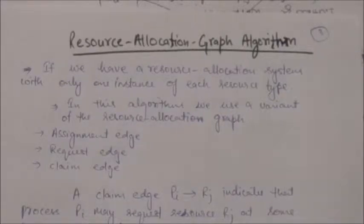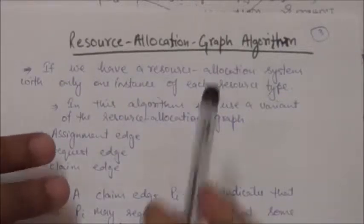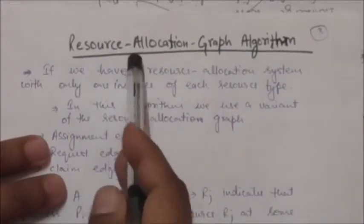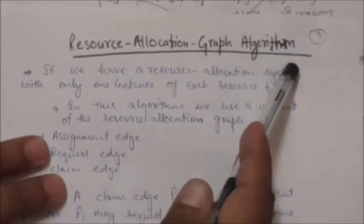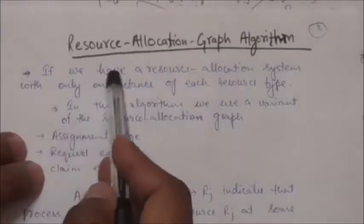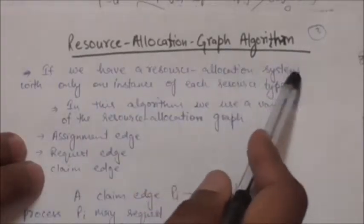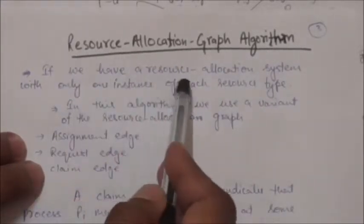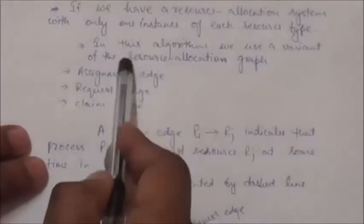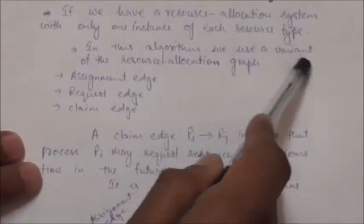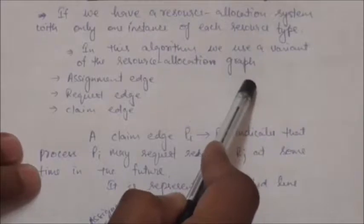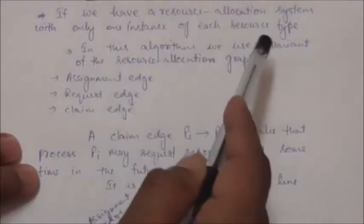Hello friends, welcome back. In this tutorial we will study about the Resource Allocation Graph algorithm. It is a deadlock avoidance algorithm, and it is applicable only if we have a resource allocation system with only one instance of each resource type. In this algorithm we use a variant of the resource allocation graph.